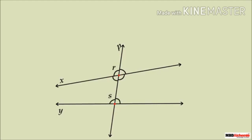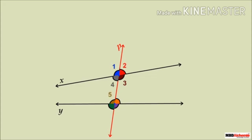Have you noticed the angles made by the transversal line P in the figure? How many angles have been made? Four angles are made by the transversal at point R and another four angles are formed at point S. When a transversal intersects a pair of straight lines, let's name the angles 1, 2, 3, 4, 5, 6, 7 and 8.